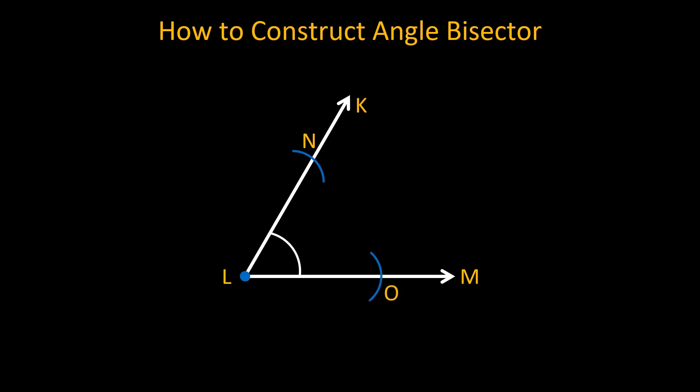Now taking N and O as centers and with the same radius, draw two arcs to intersect each other at P. Join L to P. This ray LP is the required angle bisector of angle KLM.